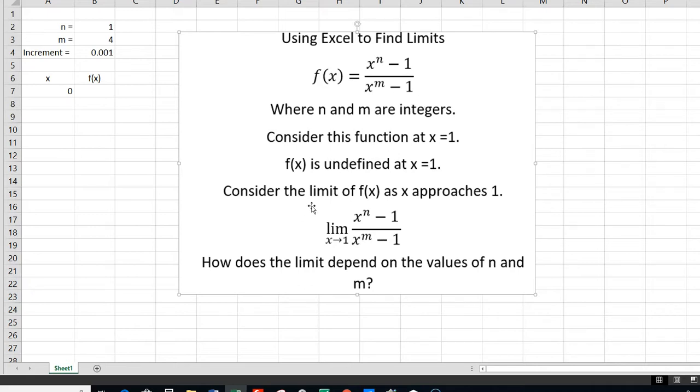So we want to consider the limit of this function as x approaches 1. We want to look at how it approaches 1 from below, increasing values of x toward 1, or above, decreasing values of x toward 1. And how does the limit depend on what value of n and m are in the function?